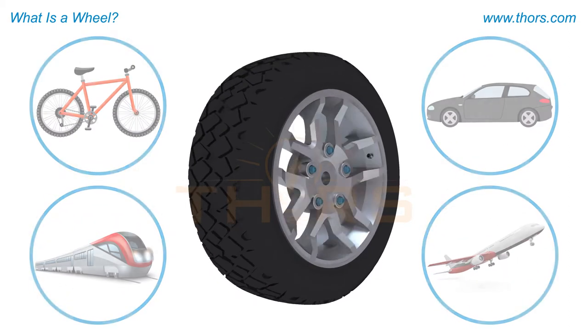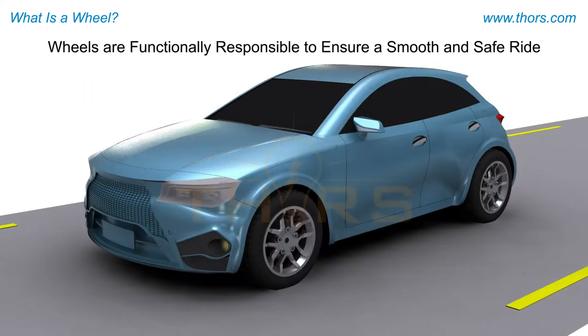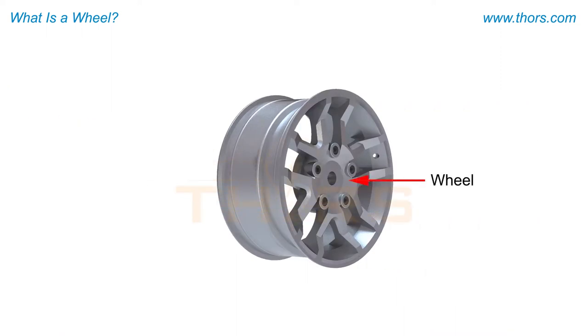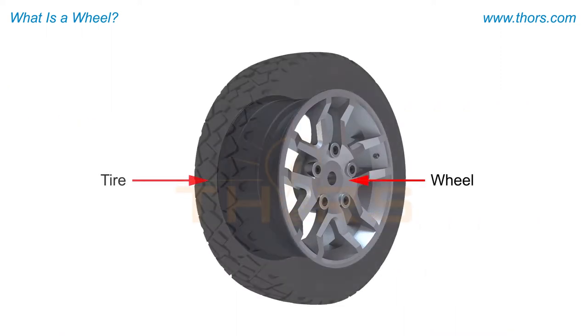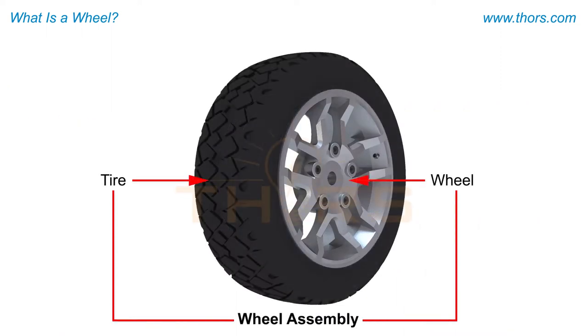Wheels are critical elements of a vehicle, which are functionally responsible to ensure a smooth and safe ride. A wheel and a tire together are referred to as a wheel assembly.